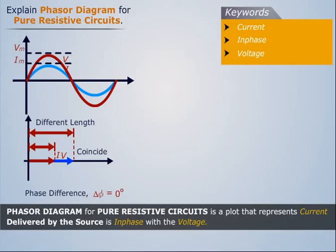Thus Phasor Diagram for Pure Resistive Circuits is a plot that represents current delivered by the source in phase with the voltage.